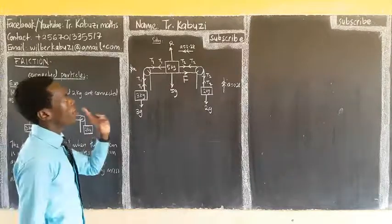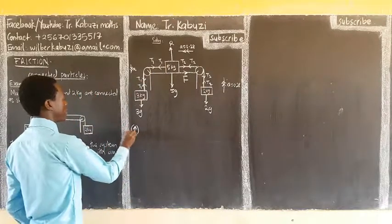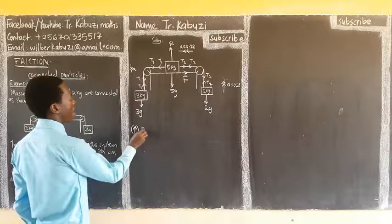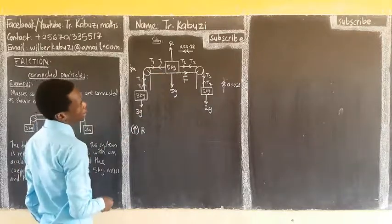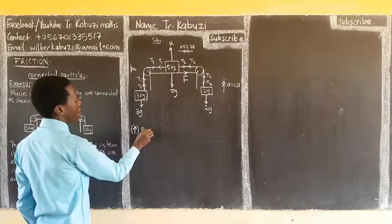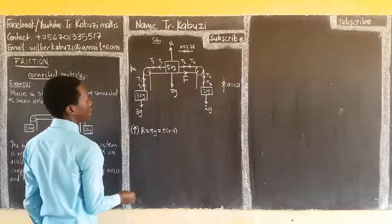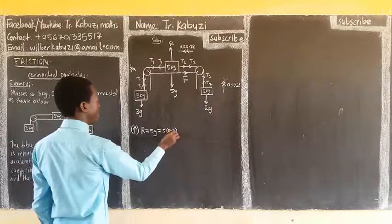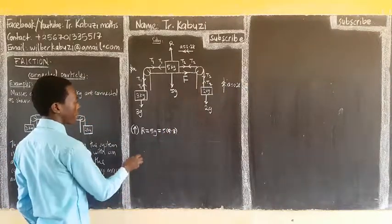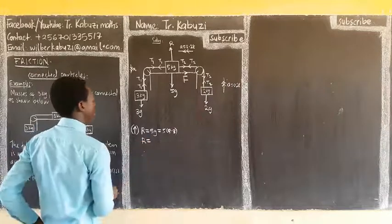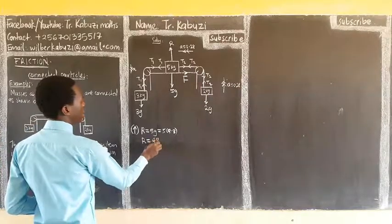You start, the one that starts with friction, you start by getting R. So, now, we can resolve upwards. Like that. So, what do we have there? Our R. Because there's no acceleration in the upward direction. So, it means that these two forces are balancing. So, our R is equal to 5G, which would be 5 into 9.8. And when we multiply there, our R is meant to be 49 newtons.